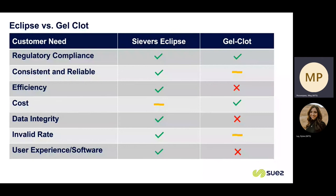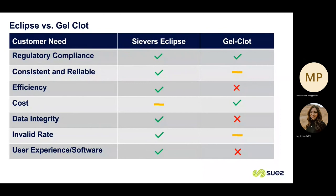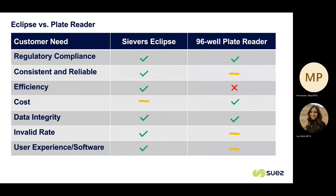Data integrity is a concern with GelClot — there's no software involved, so most regulatory agencies recommend the 4i principle, meaning two analysts have to watch the assay come off after one hour to confirm a negative or positive, which is then recorded in a lab notebook with no audit trail. The invalid rate with GelClot is much higher than with the Eclipse, and there's no software involved, so the user experience is not there compared to the Eclipse.